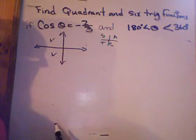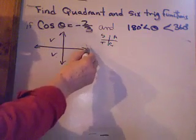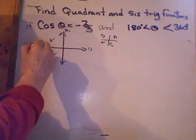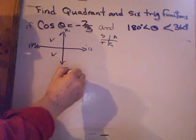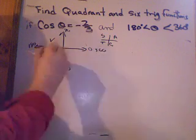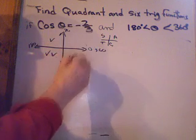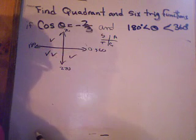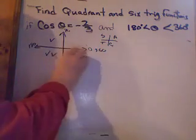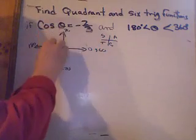On to the second clue. The theta is between 180 and 360. So 0, 90, 180, 270, 360. Between 180 and 360 puts it here or here. One of those quadrants has two checks, and guess what? That's where the angle is. Now we know the angle is in quadrant three.